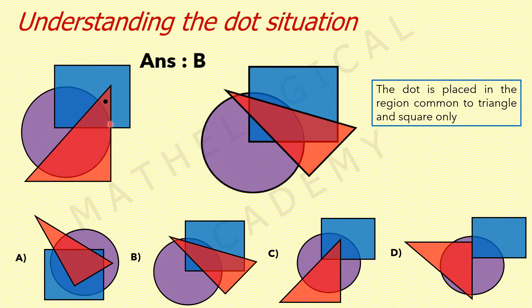Now let's check option A. The region which is common to triangle and square lies inside the circle, so it is not common to triangle and square only.